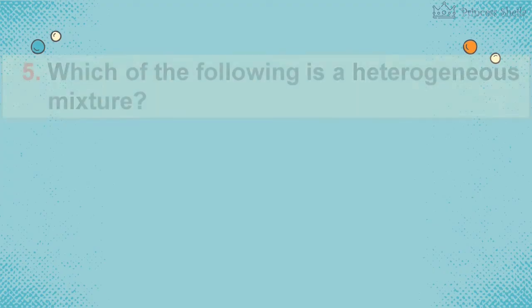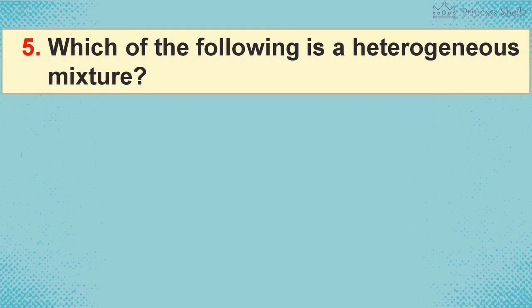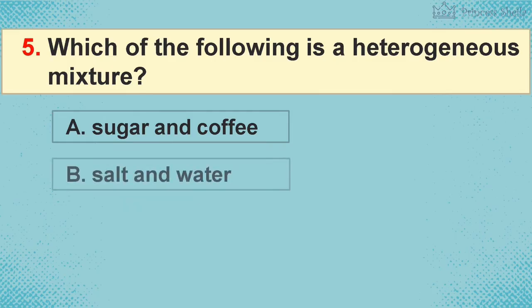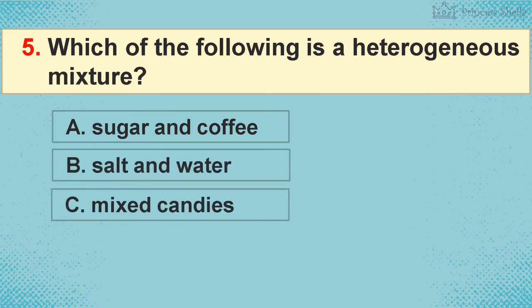5. Which of the following is a heterogeneous mixture? A. Sugar and coffee. B. Salt and water. C. Mixed candies. D. Alcohol.